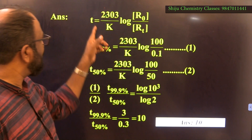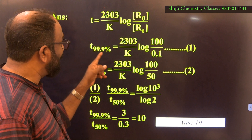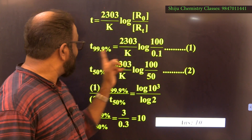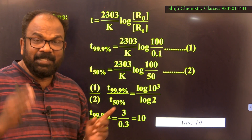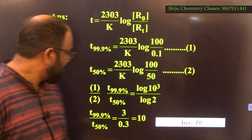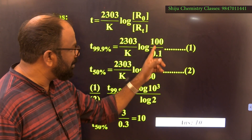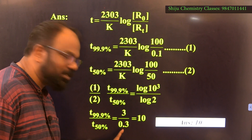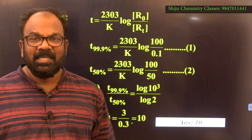For a first order reaction, time for 99.9% completion: t₉₉.₉% = (2.303/k) × log(100/0.1). Time for 50% completion (t½) = (2.303/k) × log(100/50). Dividing: t₉₉.₉% / t½ = log(10³) / log 2 = 3 / 0.3 ≈ 10. Therefore t₉₉.₉% = 10 × t½. The answer is 10.